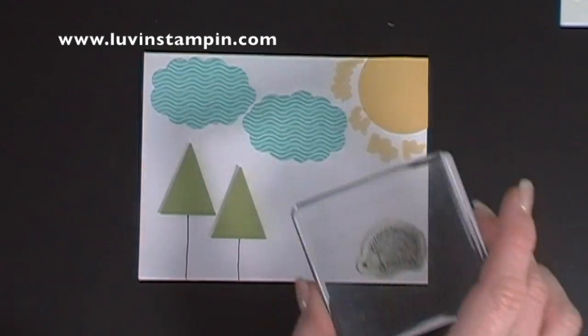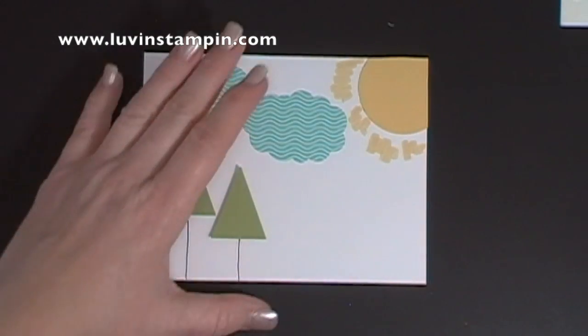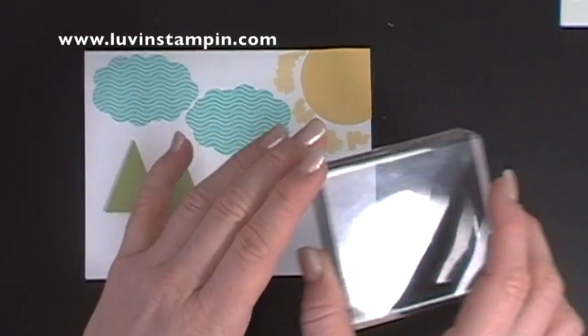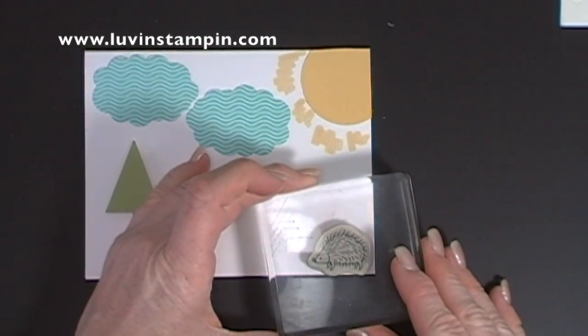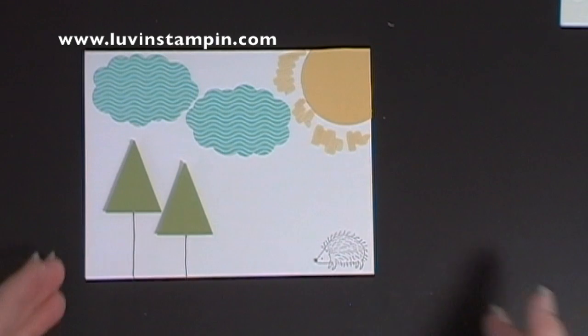Okay, so I'm using the little porcupine, and I'm stamping him in basic gray ink, one of my favorite ink colors. I don't use it often enough. I'm putting him right there in the corner.